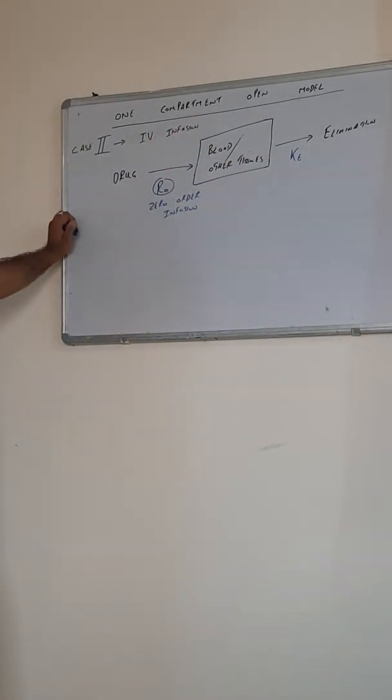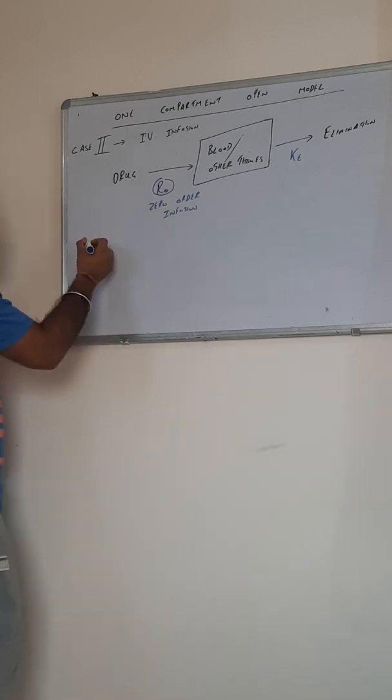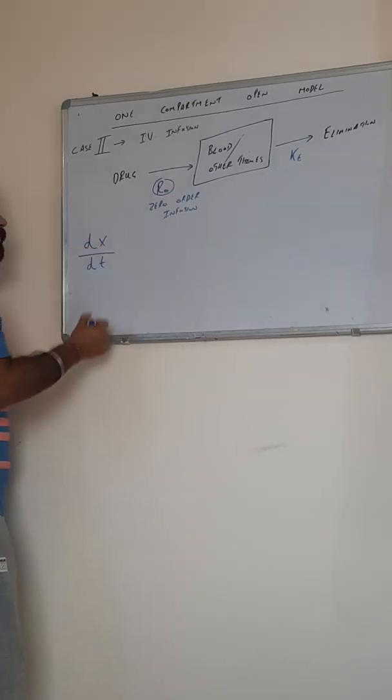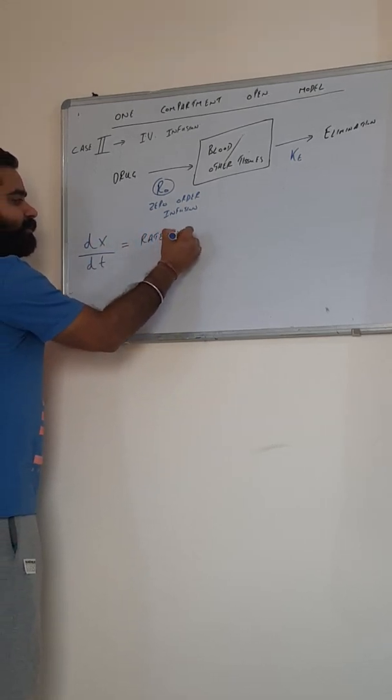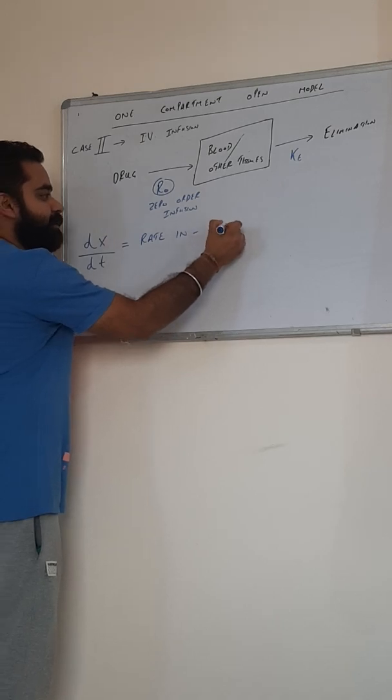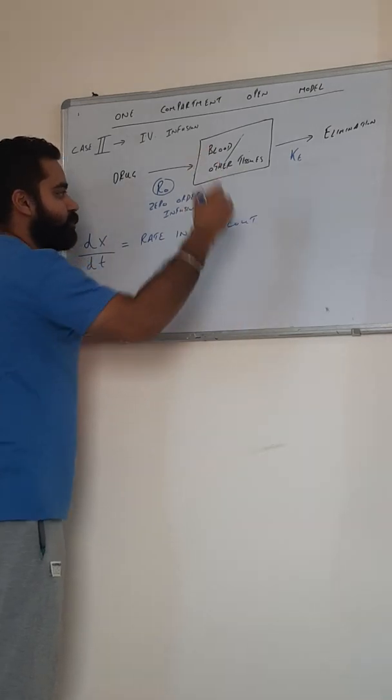The amount of drug in body at any given time, the rate of change of the amount can be given by the expression DX/DT. As you know, DX/DT is given by rate in minus rate out.